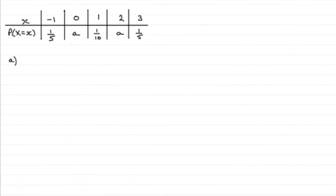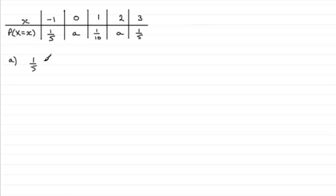For this part of the question, we're given the probability distribution table for the discrete random variable X, and asked to find out what the value of 'a' is. To do this, we have to remember that the sum of the probabilities must total 1. So we have 1/5 plus 1/10 plus 1/5 plus the 2a's comes to 1. If you add up 1/5, 1/10, and 1/5, that comes to a half.